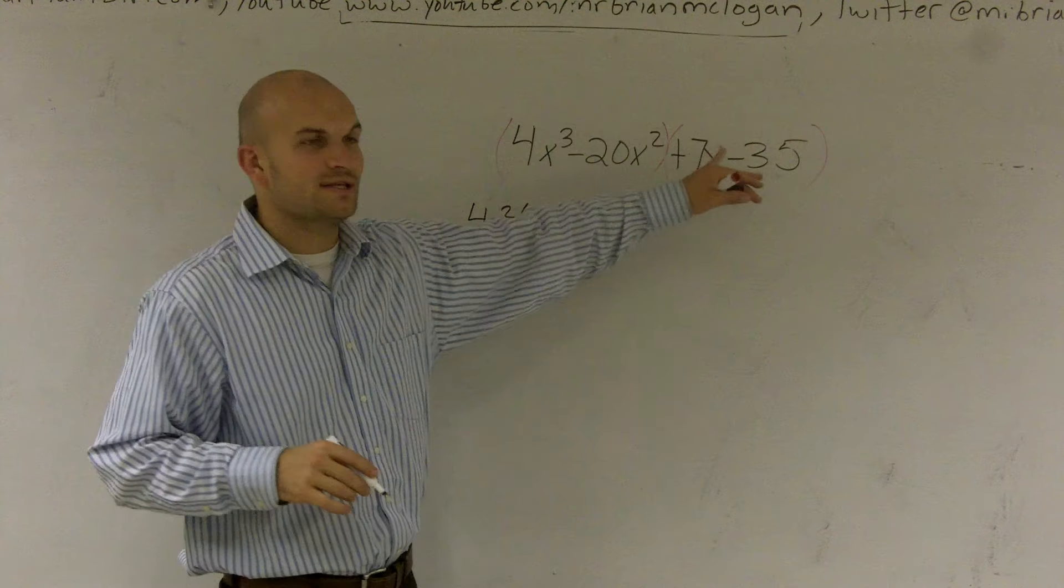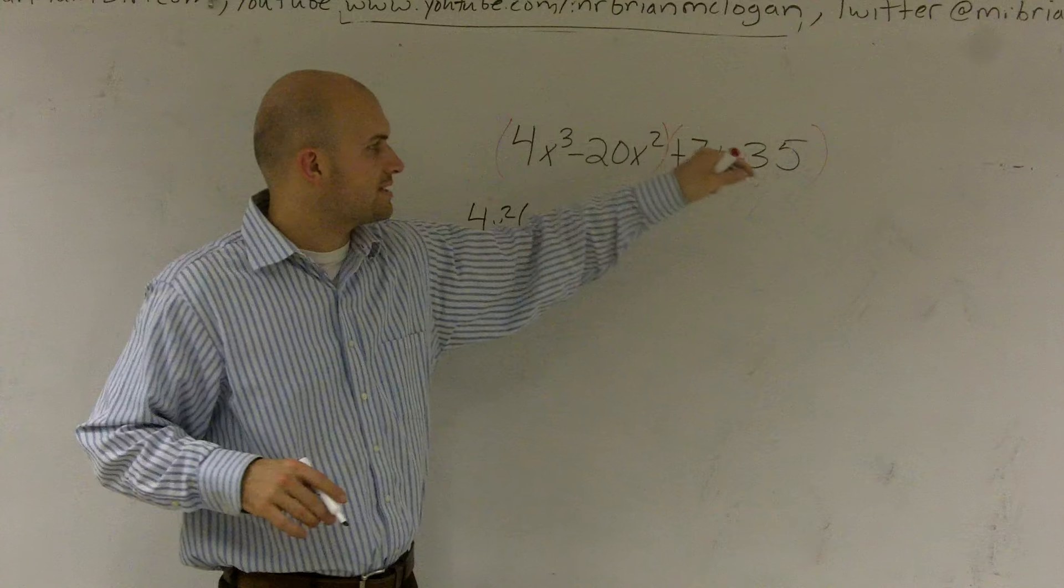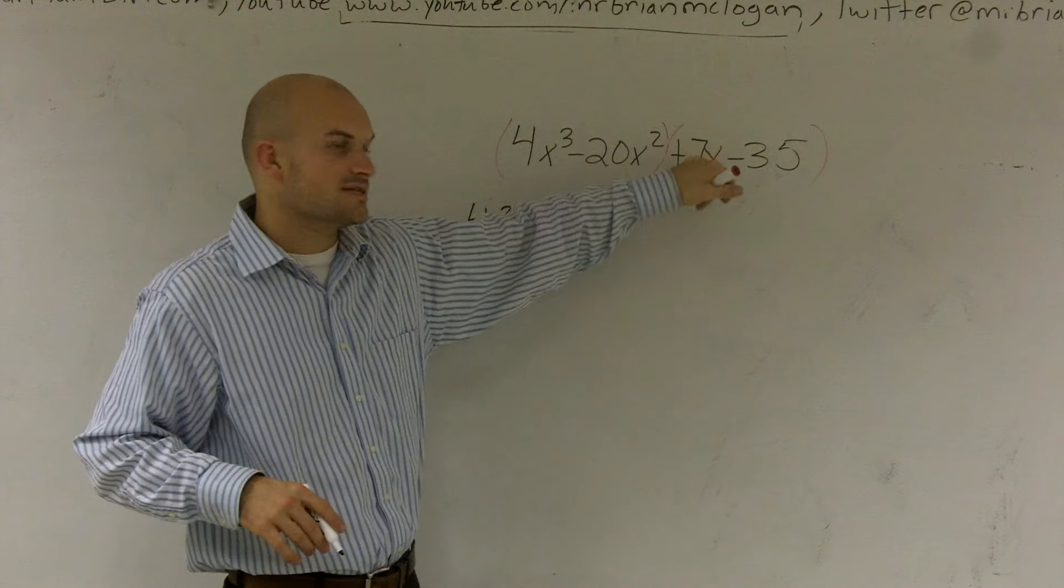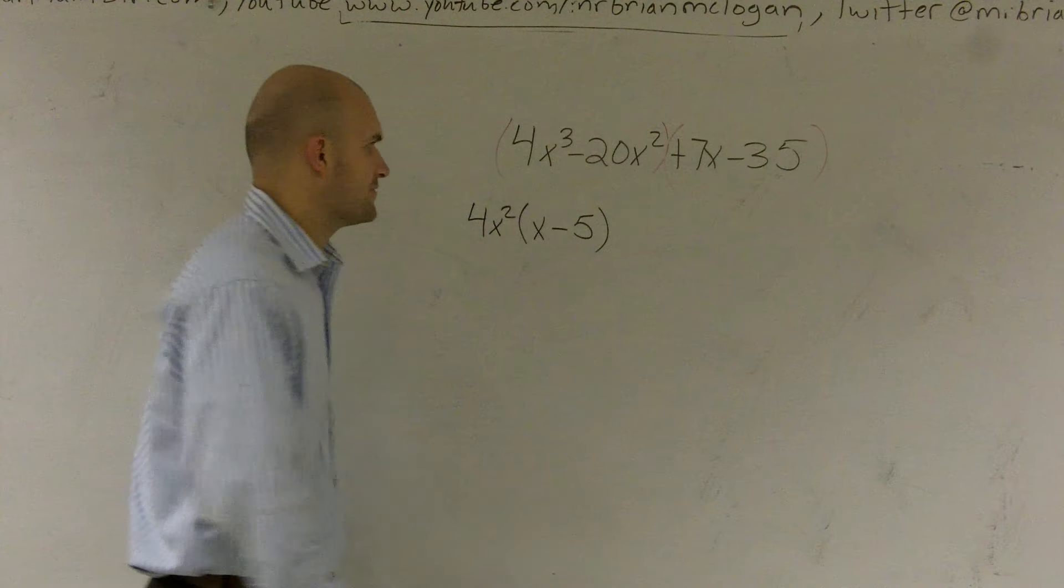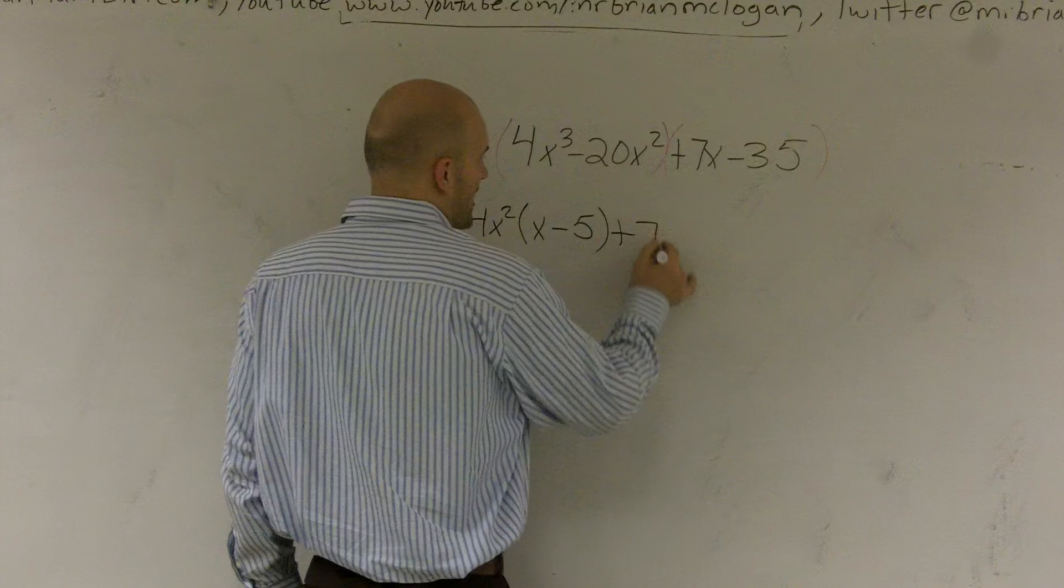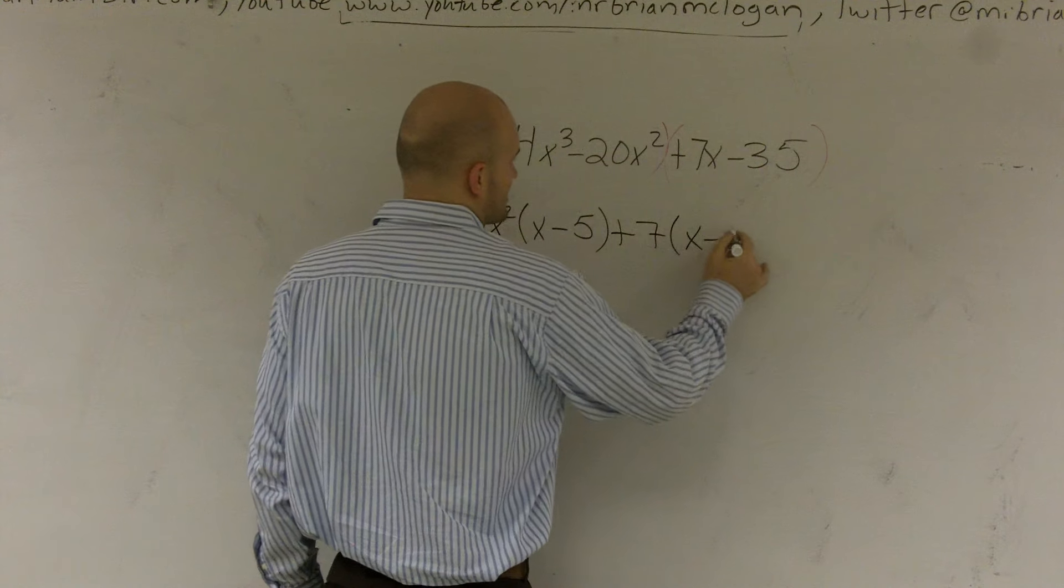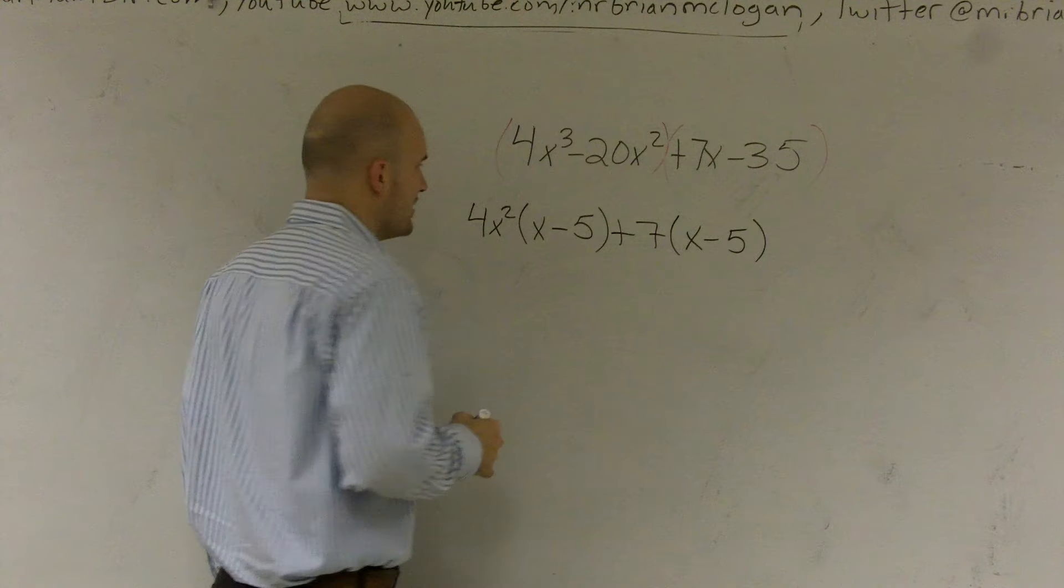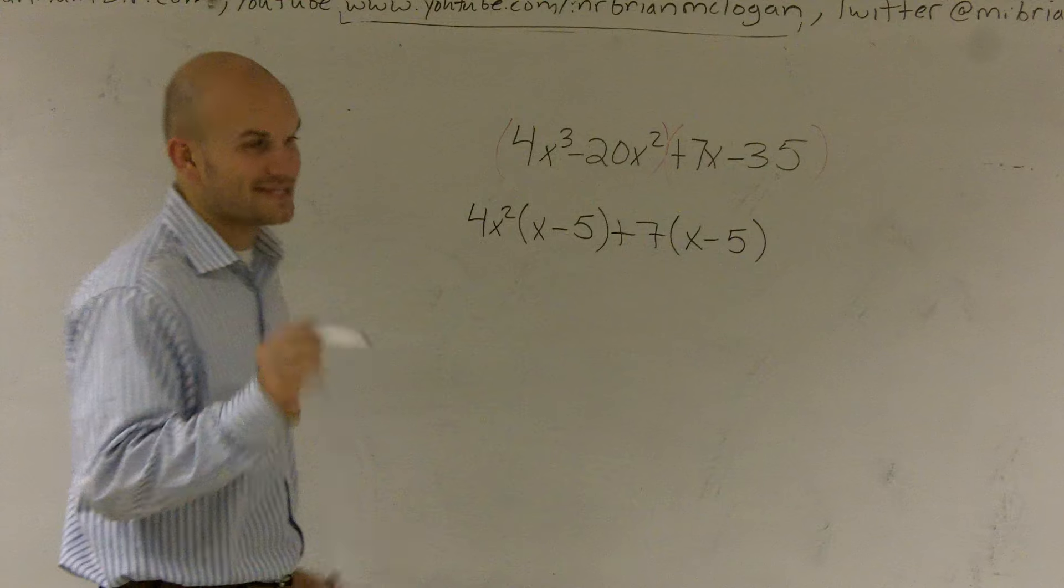Then, over here, you want to look and say, well, what do these two share? Well, they don't share an x, but they do share a 7, because 7 goes into 7 and 7 goes into negative 35. So if I factor out a positive 7, I'm left with an x minus 5.